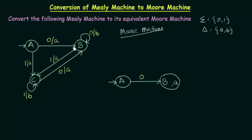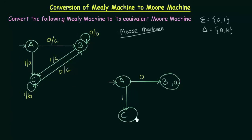Now, A on getting input 1 — it goes to state C. The output that it gives is A, and since it is going to state C, I will associate this output A to state C. So we have completed for state A.